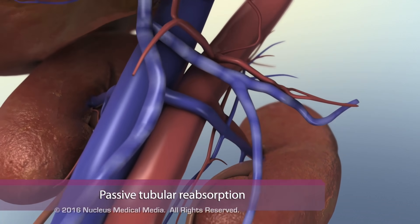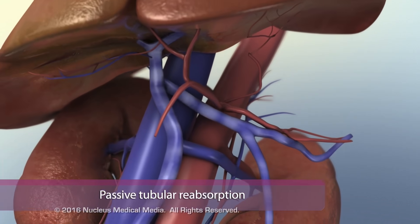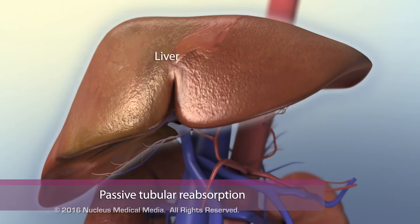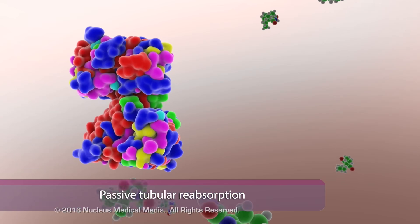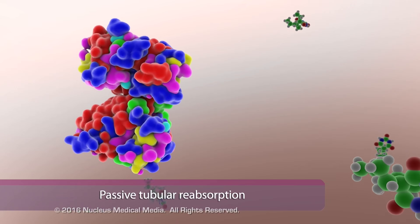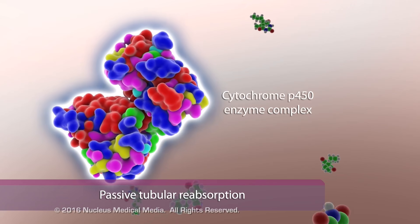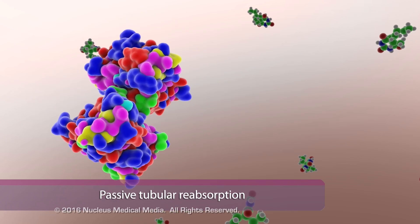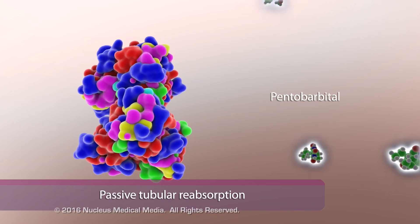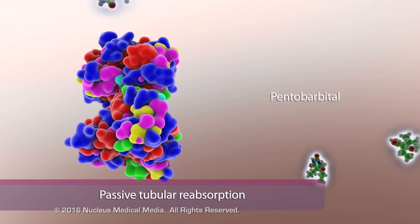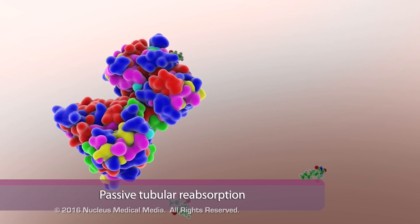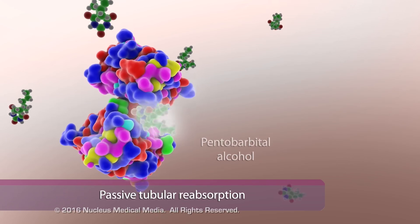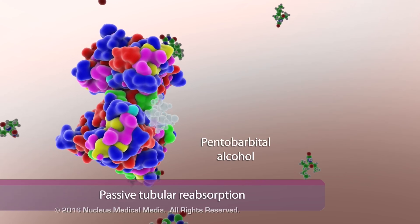After reabsorption, lipid-soluble drugs travel through the bloodstream to the liver, where certain liver enzymes, such as the cytochrome P450 enzyme complex, metabolize them into more water-soluble forms. Here we show an example of this process through the metabolism of pentobarbital.